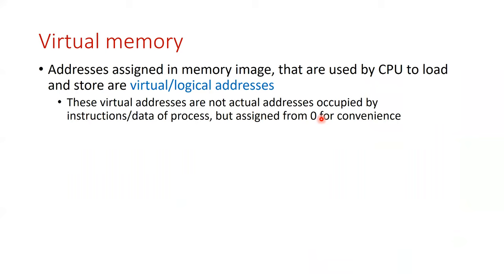Now we move on to virtual memory. The addresses assigned to instructions and data in the memory image are called virtual or logical addresses. These are used by the CPU when accessing instructions and data. These are not the actual physical addresses where data is stored in RAM — they are logical virtual addresses assigned from zero for convenience. It is not possible for every process to have its data stored from byte zero in RAM.